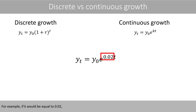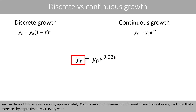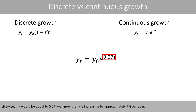We can therefore interpret the continuous growth rate as the discrete growth rate for small values of K. For example, if K equals 0.02, we can think of this as Y increases by approximately 2% for every unit increase in t. If t has the unit of years, we know that Y increases by approximately 2% every year. Likewise, if K equals 0.07, we know that Y is increasing by approximately 7% per year.